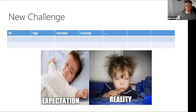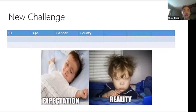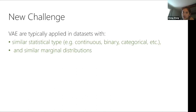Going to real-world customers, expectation and reality differed significantly. The VAE works well on datasets with a single statistical type — all discrete for recommender systems, all continuous for MNIST, or all categorical for education — with similar marginal distributions. But real-world data comes with different statistical types mixed together.